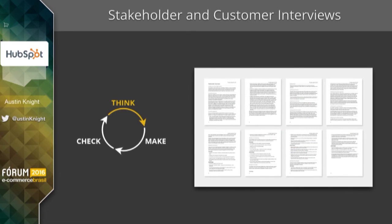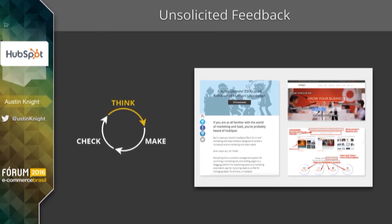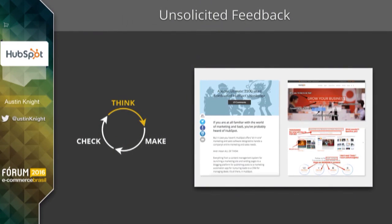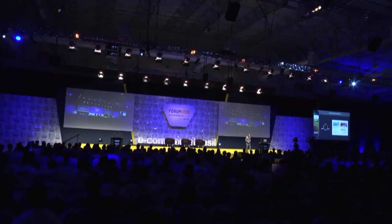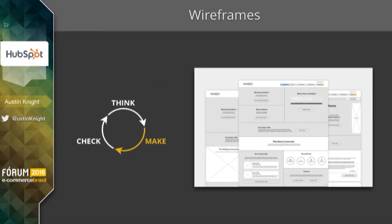We interviewed our stakeholders and customers to understand their goals for the design. And we even got some unsolicited feedback. HubSpot is a pretty big brand, so we have a lot of people coming to our website, and they like to tell us what they think of our designs. This particular guy wrote 2,200 words about how much he hated our design — and it was awesome. We used this feedback to drive some of our decisions and factor it in with the other research we were doing. Then once we had a pretty solid direction, we moved into wireframes, creating basic versions of the design, establishing the hierarchy while still having a flexible canvas to work with.